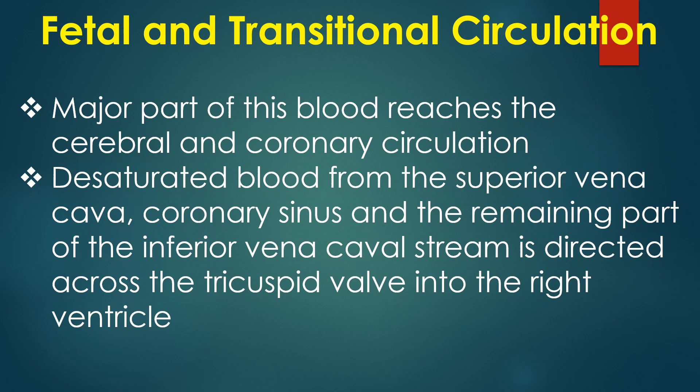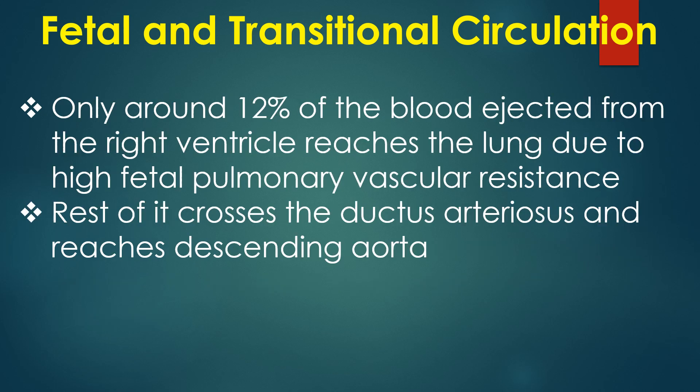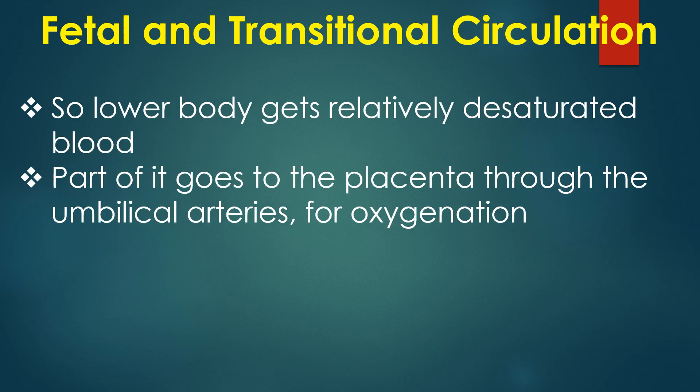Saturated blood passes into the left ventricle and is ejected into the aorta, with the major part reaching the cerebral and coronary circulation. Desaturated blood from the superior vena cava, coronary sinus and remaining inferior vena cava stream is directed across the tricuspid valve into the right ventricle. Only around 12% of the blood ejected from the right ventricle reaches the lung due to high fetal pulmonary vascular resistance. The rest crosses the ductus arteriosus and reaches the descending aorta, so the lower body gets relatively desaturated blood, part of which goes to the placenta for oxygenation.